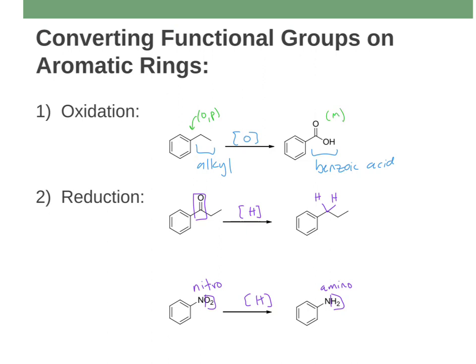What's going to be useful when we're starting to do synthesis problems is to keep in mind that these changes are actually changing not only the type of activator or deactivator group, but how they direct. For example, an alkyl group is an ortho-para director, but once I oxidize it to a carboxylic acid, it becomes a meta director. Same thing with a carbonyl reduced to an alkyl group, or a nitro reduced to an amino — meta to ortho-para director.